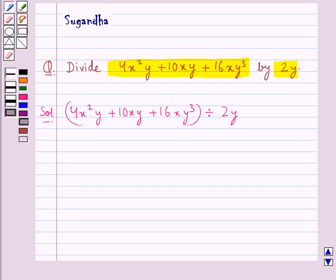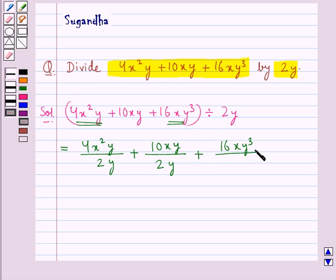So for doing this we need to divide each term of this polynomial by the given monomial. This would be equal to the first term of the polynomial that is 4x square y by the monomial 2y plus the second term of the polynomial that is 10xy by the monomial 2y plus the third term of the polynomial 16xy cube by the monomial 2y.